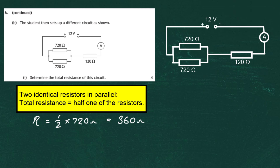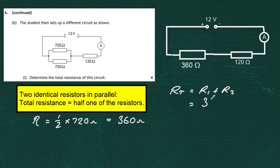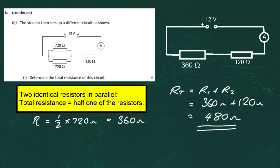So the resistance of the parallel part equals one half of 720 ohms, which gives 360 ohms. We can now replace those two parallel resistors with a single 360 ohm resistor. The total resistance of the circuit is then R1 plus R2: the parallel part at 360 ohms plus the 120 ohms in series, giving a total of 480 ohms.